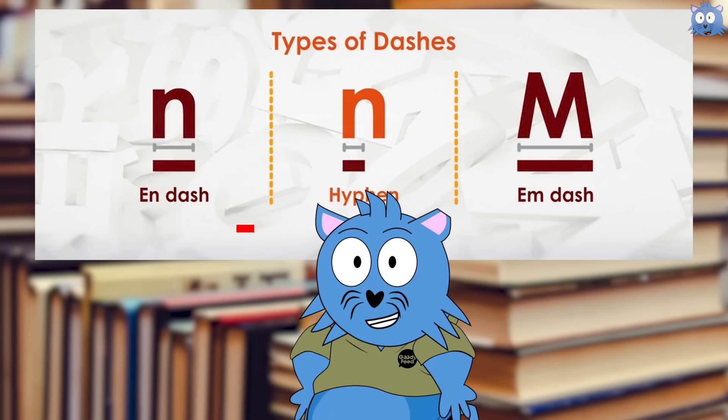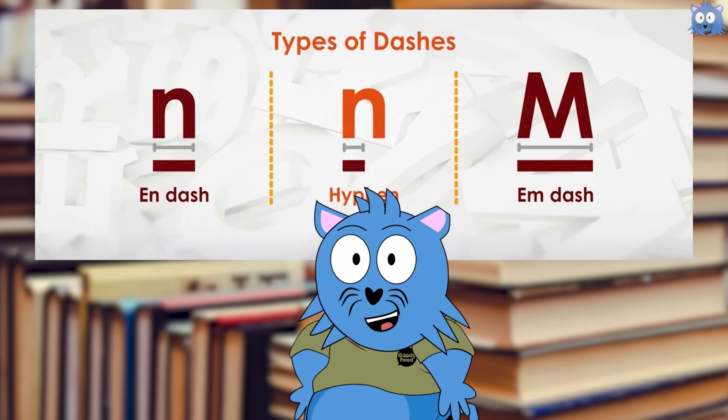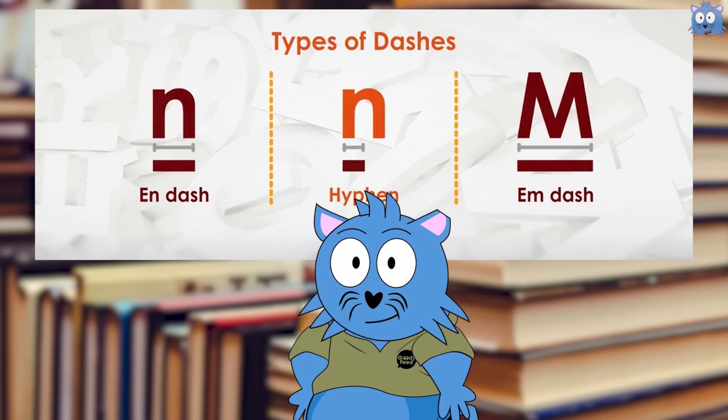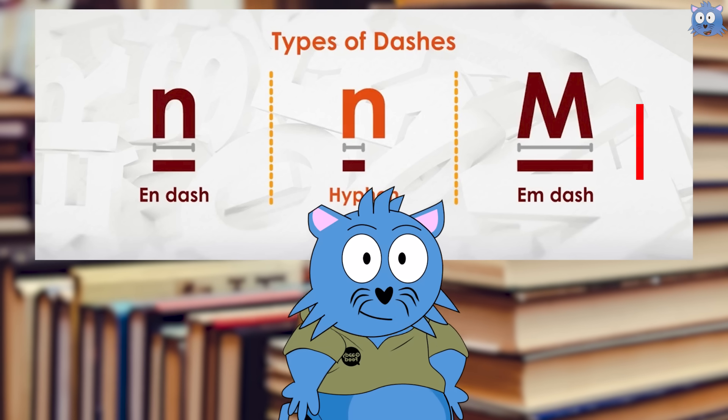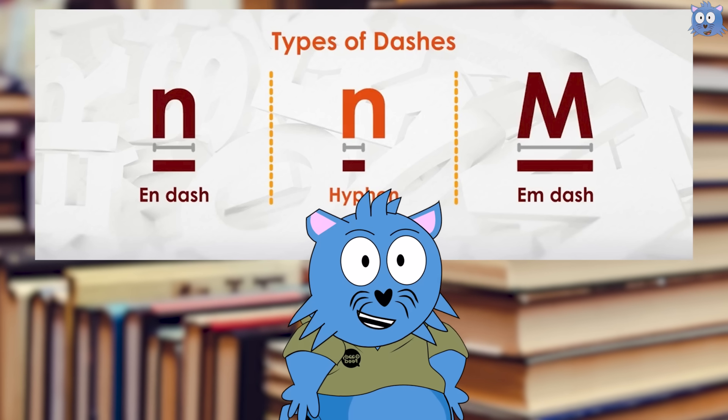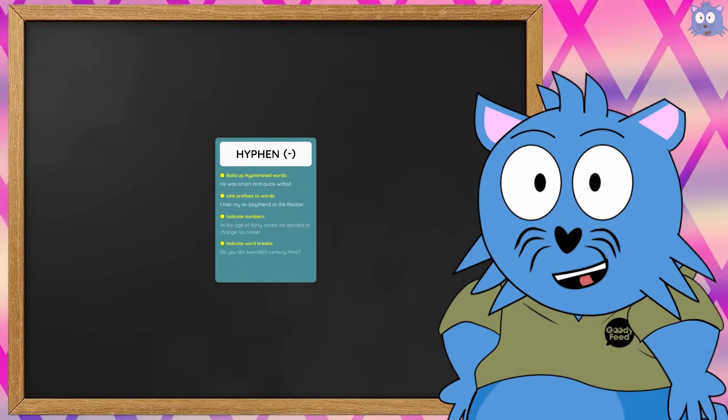The hyphen is the shortest. The N-dash is like the length of the letter N, so it's longer than a hyphen. And the M-dash is like the length of the letter M, so it's the longest.